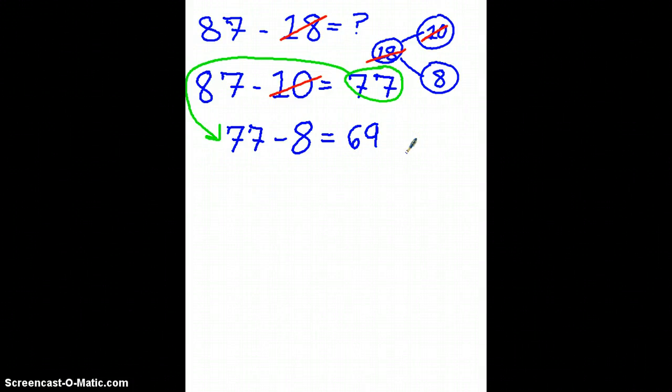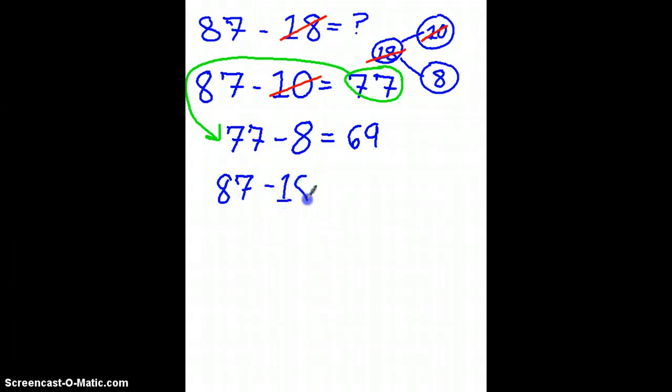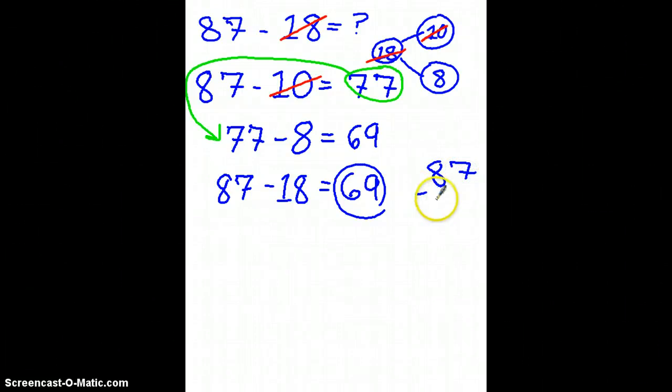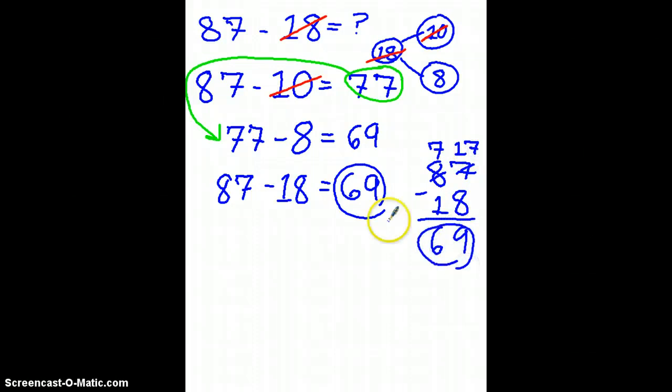So my final answer I could say is that 87 minus 18, which I was really trying to solve, is equal to 69. And I can show that the old-fashioned way, but remember we're doing this in our heads, so that's the whole point of this, that I can use the number bond to help me out. And I should be able to get the same answer if I do it this way, which these two numbers are the same, so it works just as well.